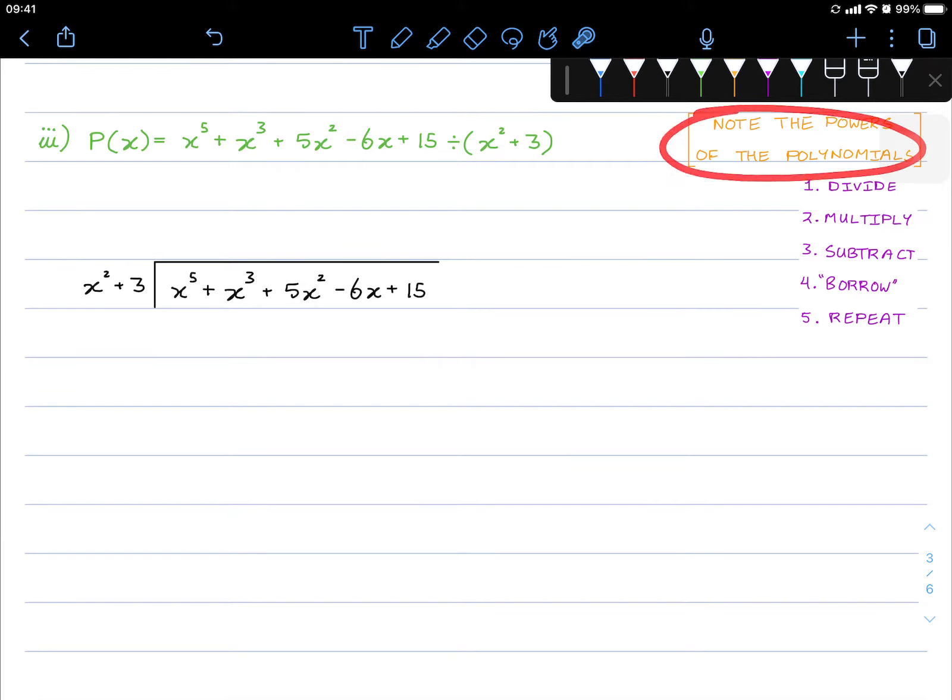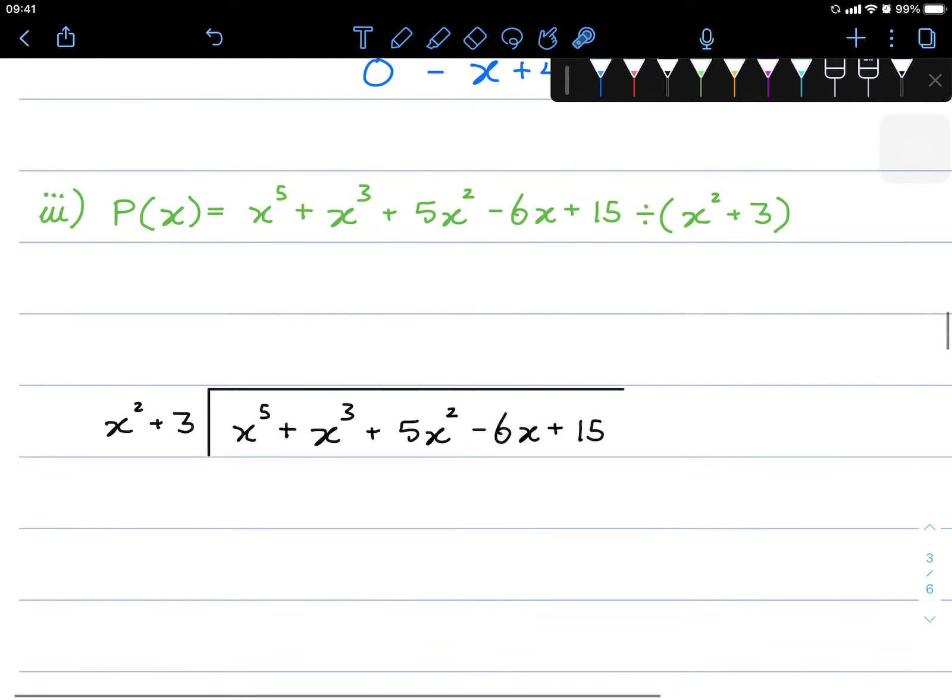I've wrote down here to note the powers of the polynomials. If you've noticed, it goes from x to the power of 5 all the way down to x to the power of 3. So it's missed out on x to the power of 4.